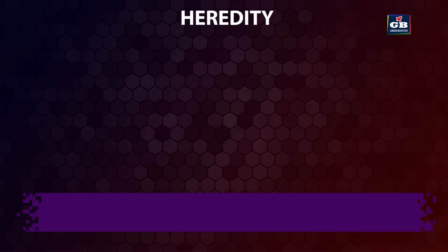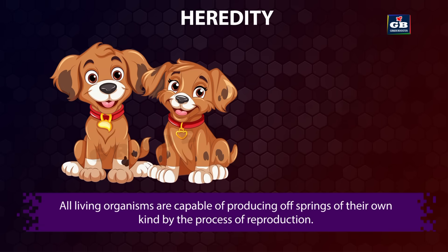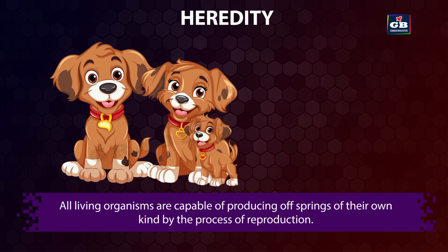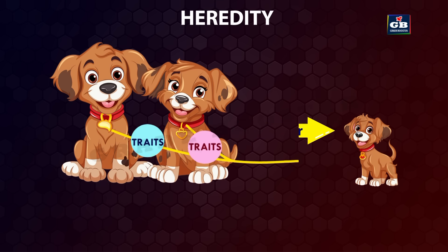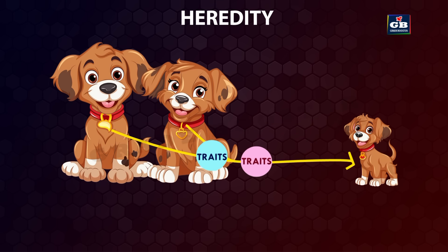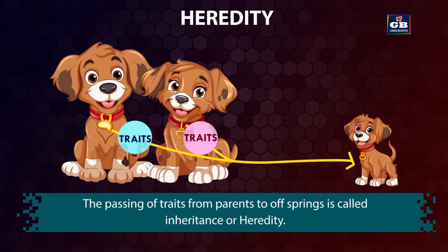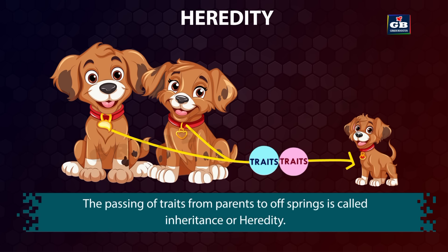All living organisms are capable of producing offspring of their own kind by the process of reproduction. The offspring are similar to their parents because the characters or traits of the parents are transferred to the offspring during reproduction. This passing of traits from parents to offspring is called inheritance or heredity.